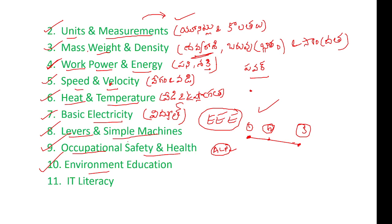The last unit is IT Literacy — computer literacy. IT involves a lot of computer knowledge. You have to study software. There are basic things including MS Word, MS Excel, and other applications. There are different generations of computers from first to fifth generation. Basic computer architecture, viruses, software, and hardware are all covered in this unit.